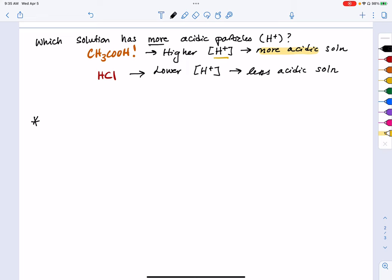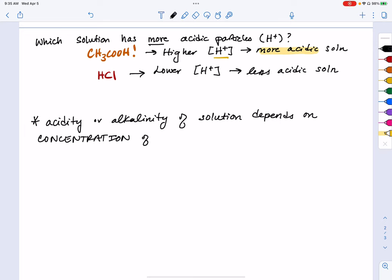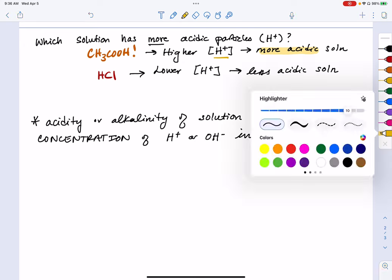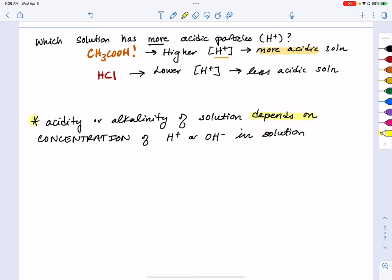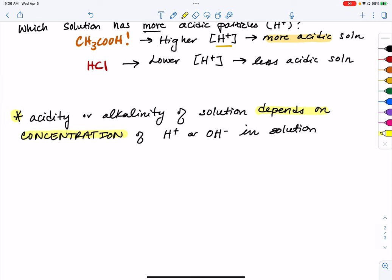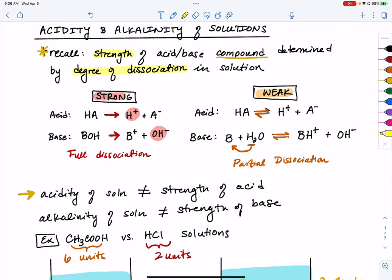Because ultimately, the acidity or alkalinity of a given solution depends on the concentration of acidic particles, so H+ or OH- ions that are present in solution. Acidity or alkalinity depends on concentration. So just because you might have a strong acid, that doesn't mean that you're always going to create a solution that is more acidic because acidity depends on how much of that acid you have present.